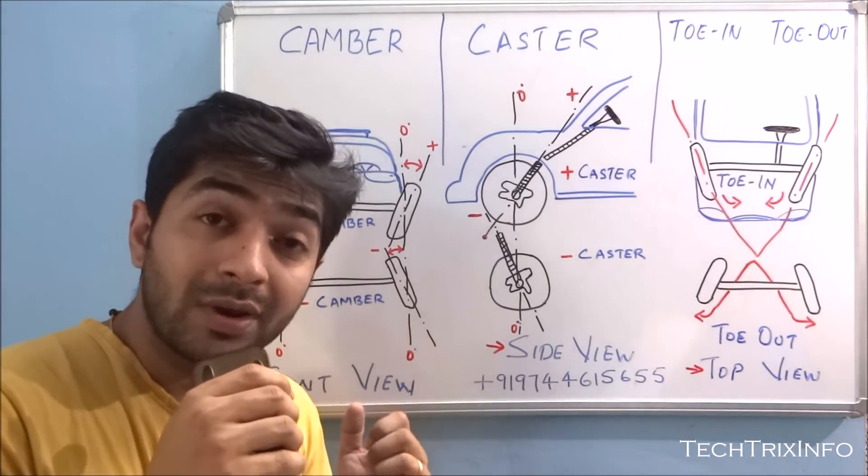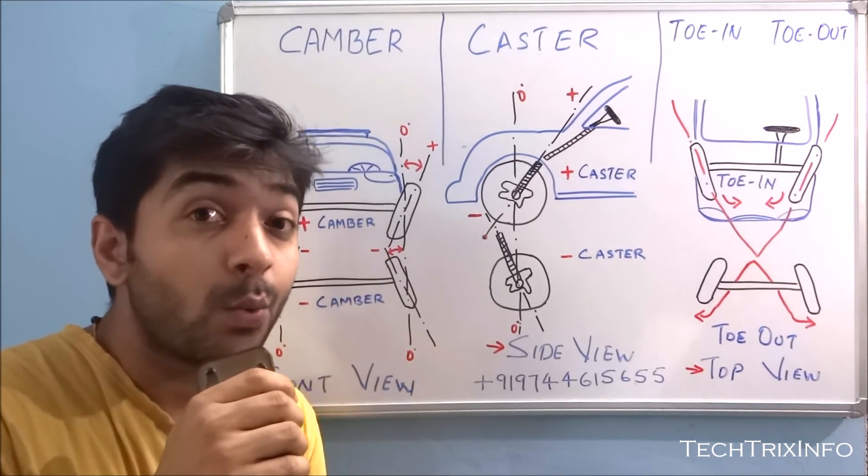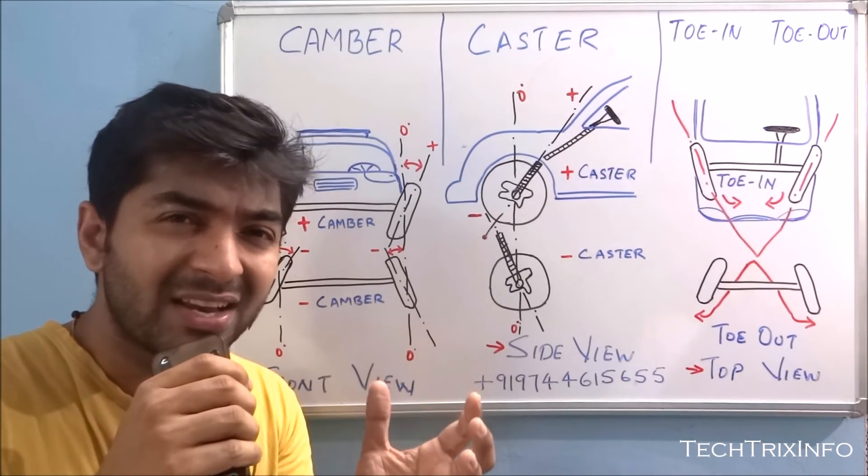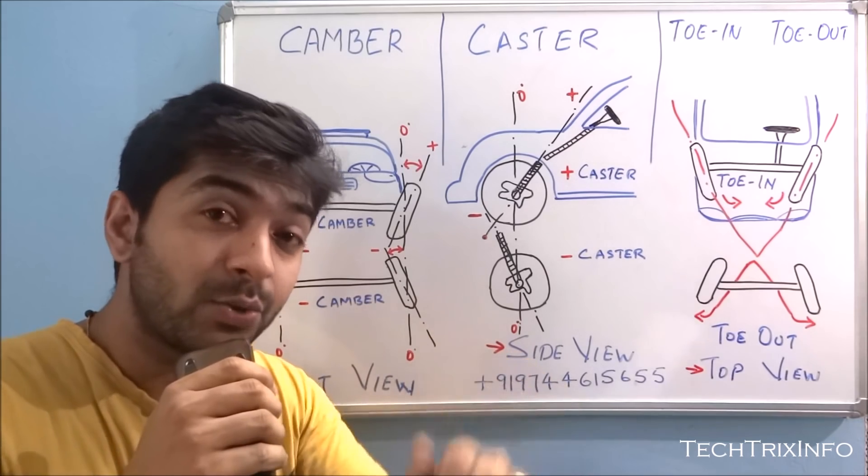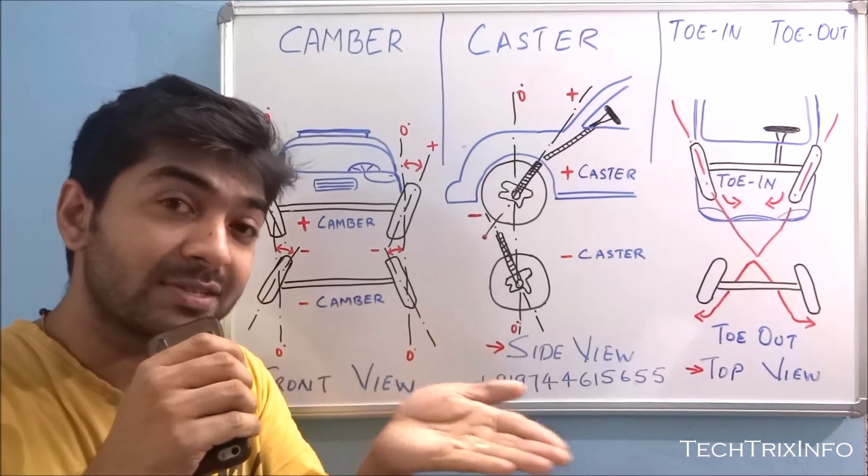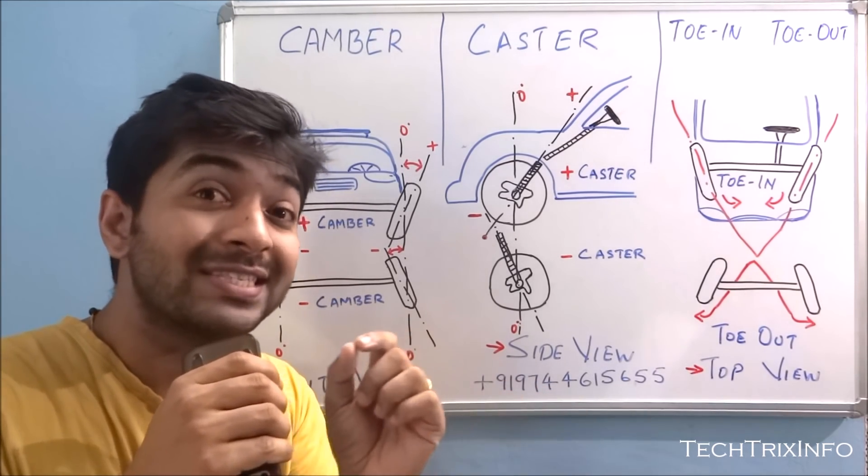So now let's directly go to the topic. Before that, you all know what is wheel alignment, right? Wheel alignment ensures that all the four wheels of your car are consistent to each other and they are optimized for maximum contact with the surface of the road. This is very important for your safety of the car and minimizing the tread wear.